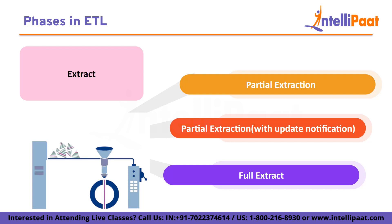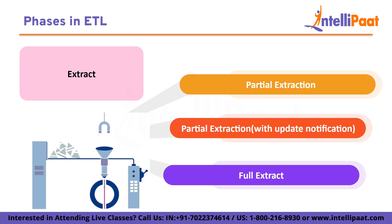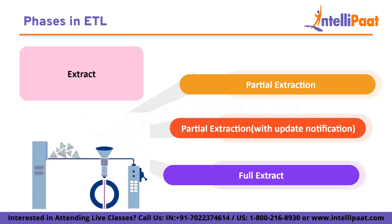First is Partial Extraction. If the source system alerts you whenever a record is updated, you can easily acquire data. Second is Partial Extraction with Update Notification. While some systems are unable to inform you when an update has taken place, they can point you in the direction of records that have already been altered, so that you can obtain an extract of those records. Third is Full Extract. It can be challenging to identify which data has been changed in some systems. The only way to get the data is to extract the complete system. You need a duplicate of the most recent records in the same format to demonstrate the modifications made.